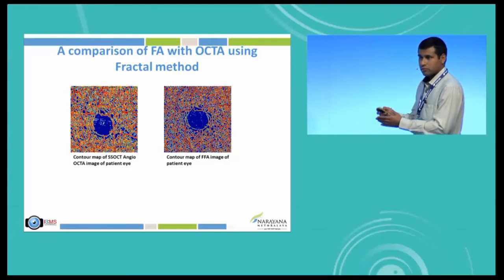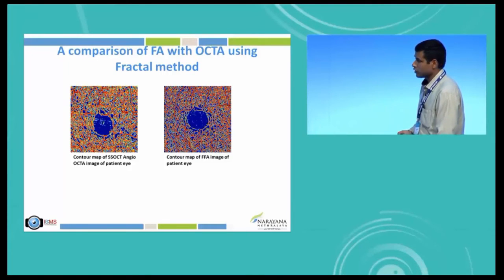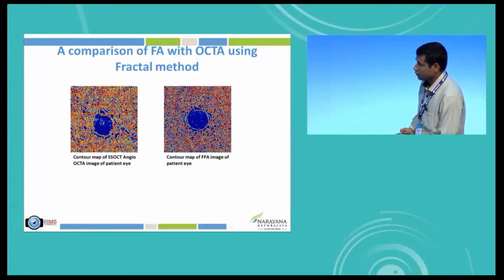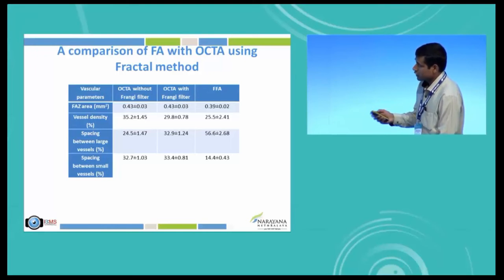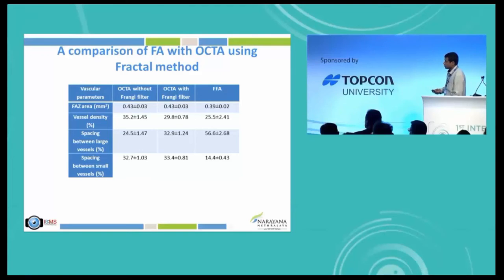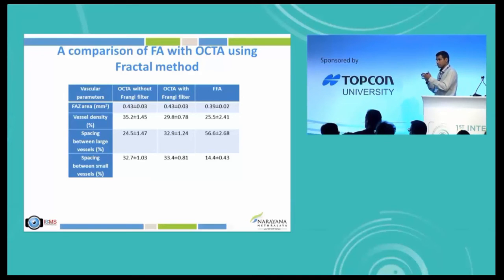The real comparison would be fluorescein angiography versus swept source OCT angiography. On the right we have the fluorescein angiography, whereas on the left we have the swept source angio-OCT image. When you look at the vascular parameters with the Frangi filter, the vessel density is almost 29 percent, whereas fluorescein angiography gave around 25 percent. Even so, we saw some marked differences in the way the vessels were spaced out in the retina.